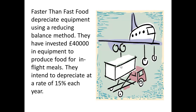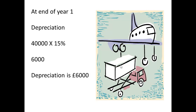Faster Than Food depreciate equipment using the reducing balance method — a different method. They invest £40,000 in equipment and intend to depreciate it at a rate of 15% per year. The first year depreciation is 15% of 40,000, which is £6,000.